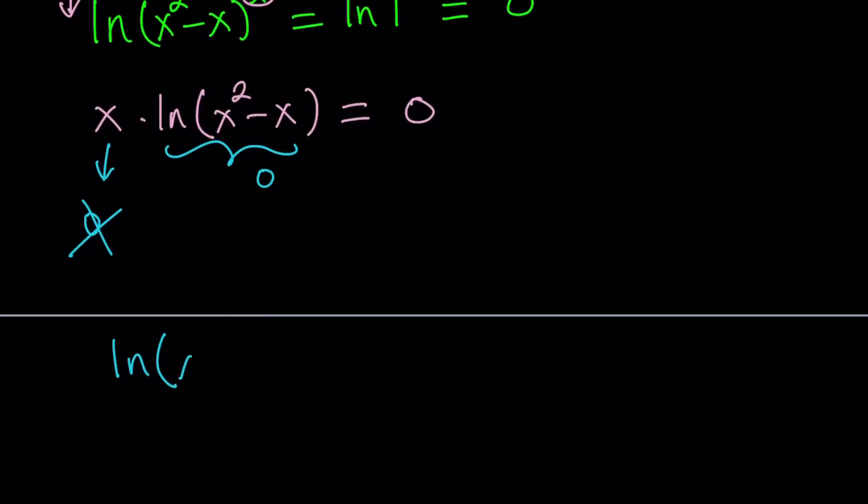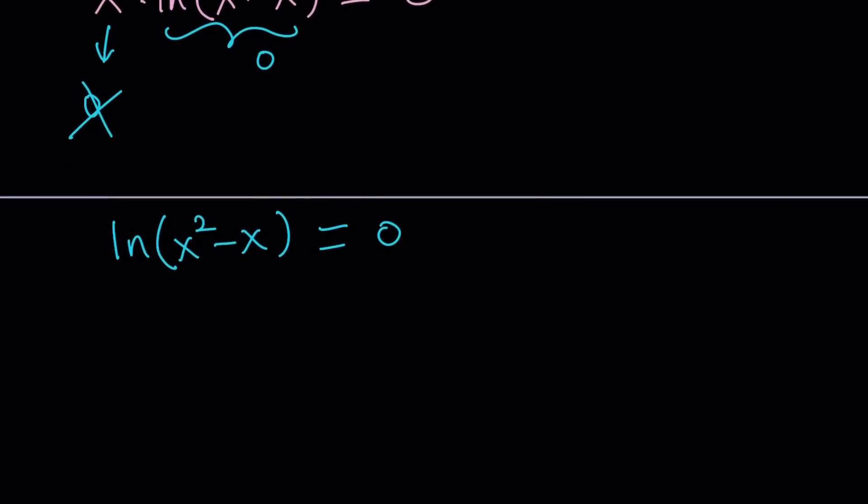Natural log of x squared minus x equals 0. Since we have the log function here we need a domain, so x squared minus x needs to be greater than 0. But at the same time, x squared minus x must be 1, because if you do e to the power of both sides, e to the power ln of something is going to be something, and e to the power 0 is going to be 1.